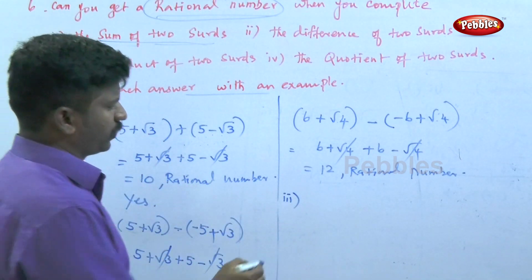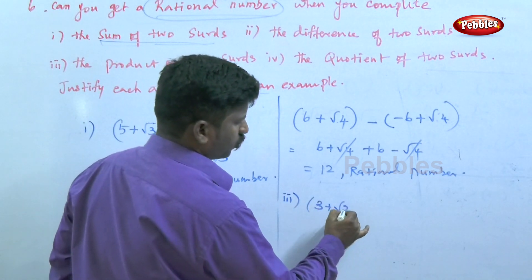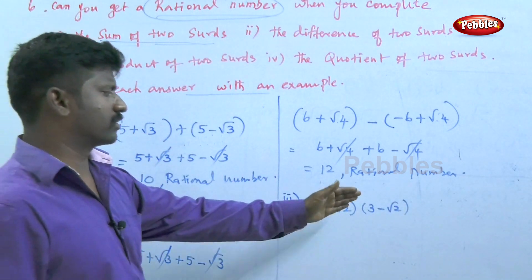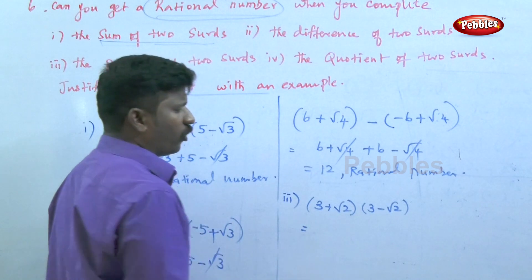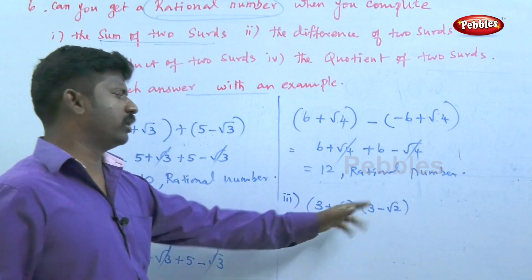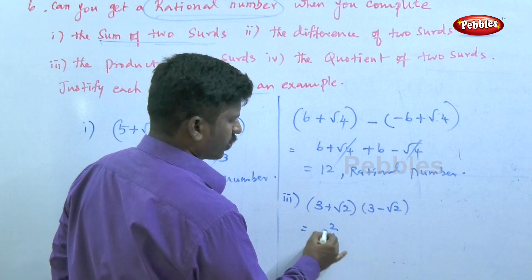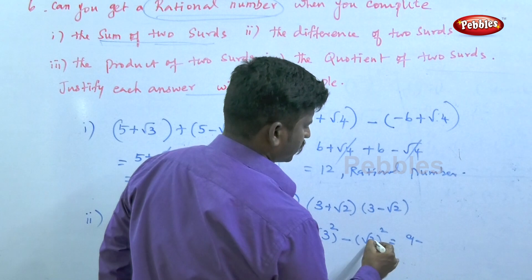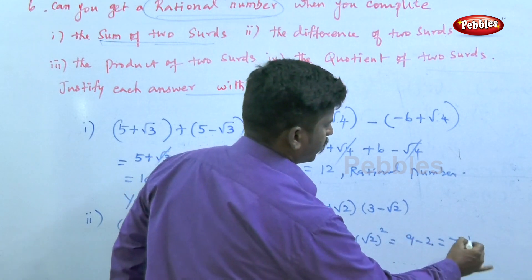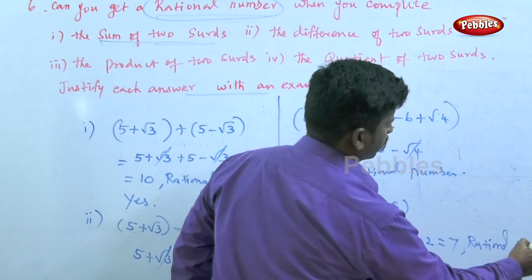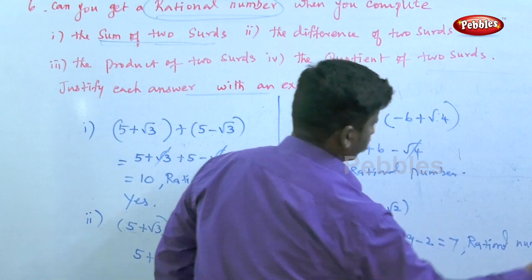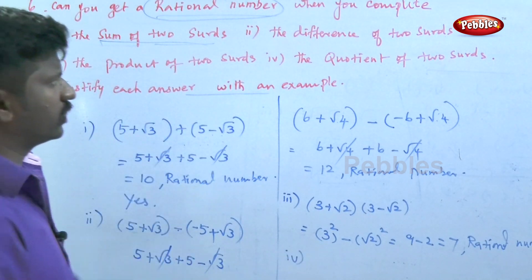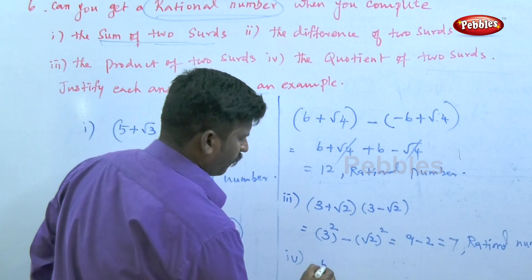For the third point — product of two surds: (3 + √2) into (3 − √2). This is in the form (a + b)(a − b) = a² − b². So we get 3² − (√2)² = 9 − 2 = 7. Seven is a rational number. Yes, the product of two surds can give a rational number.